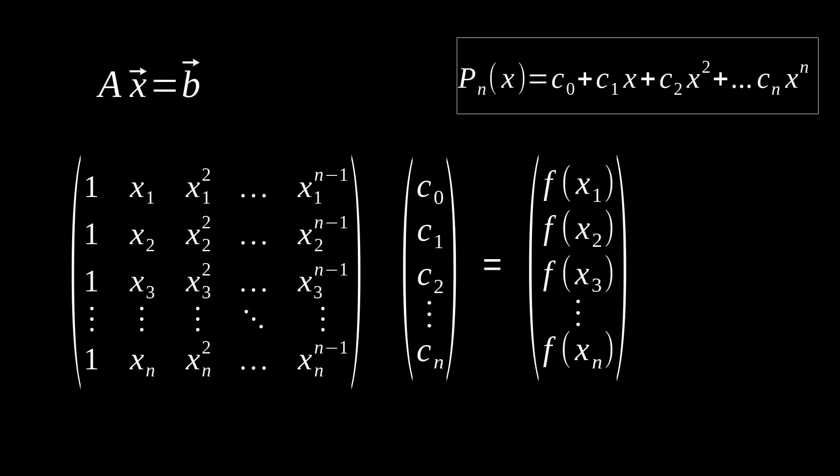Now recall that for polynomial fitting we set up a linear system that looked a little bit like this. We had a Vandermonde matrix as our A matrix. We stuck all the coefficients of our polynomial into our x vector and we stuck all our y data into our b vector. In our Vandermonde matrix we have x to the zero running down the first column, x to the first power running down the second, x squared down the third, and so on and so forth depending on what order polynomial we are actually trying to fit.